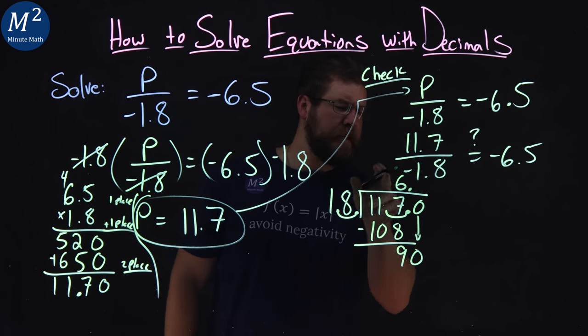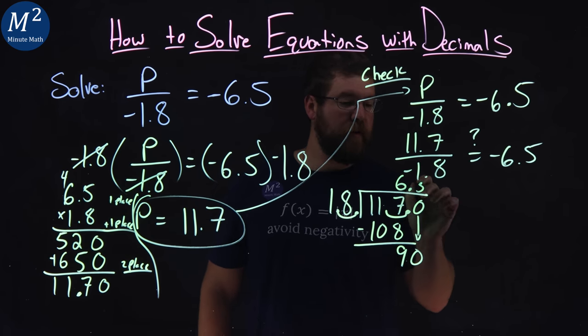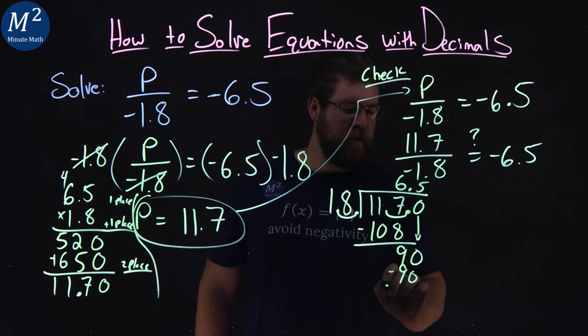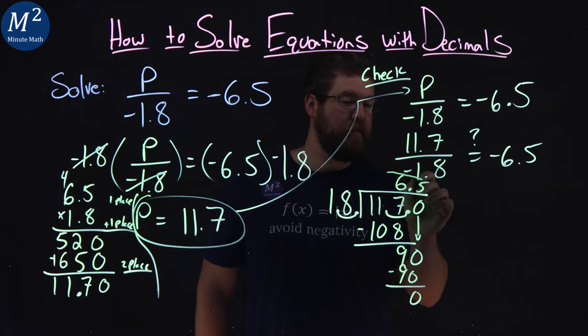0 here. Decimal. It's kind of tight to see here. 18 goes into 90. That's going to be 5 times. 5 times 18 is 90. Subtract the numbers. Get a 0. Meaning, we're done.